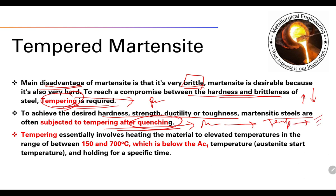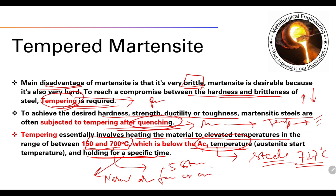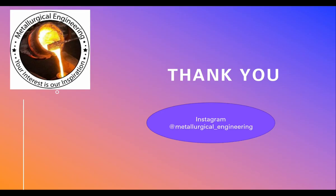Just after quenching, martensite forms and is then put into the tempering process to give optimum mechanical properties for service conditions. Tempering involves heating the material to an elevated temperature in the range of 150°C to 700°C, which is below the Ac1 temperature so that the structure does not change. There are five stages of tempering across this range, followed by holding for a specific time and then cooling — by furnace or air.